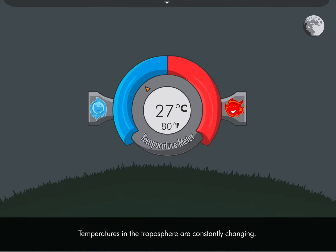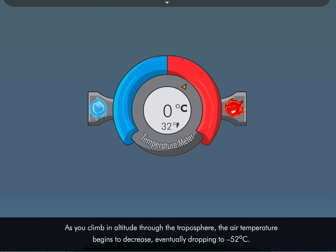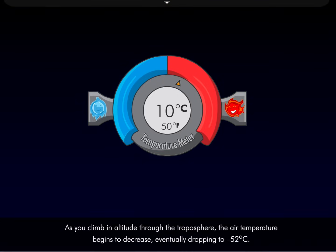Temperatures in the troposphere are constantly changing. As you climb in altitude through the troposphere, the air temperature begins to decrease, eventually dropping to 52 degrees below zero.